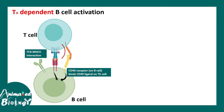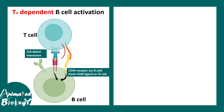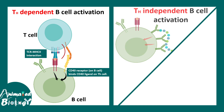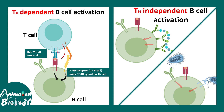This method is known as TH-dependent B-cell activation because it involves the T-helper cell. But there are also methods like T-independent B-cell activation, where several antigens crosslink the B-cell receptor, and that leads to a potent signal for B-cell activation.